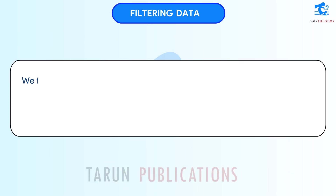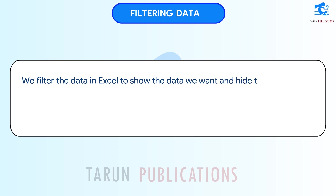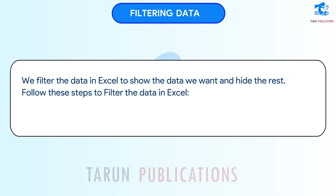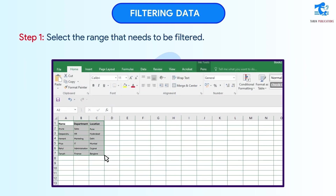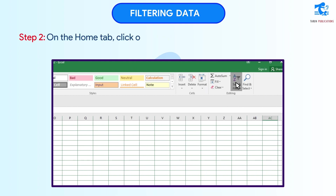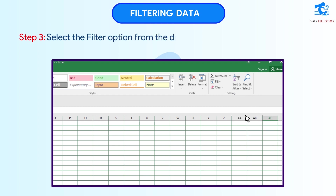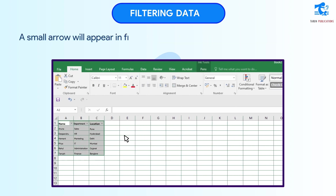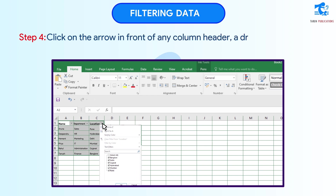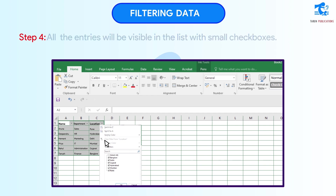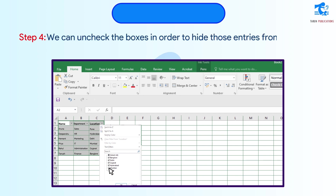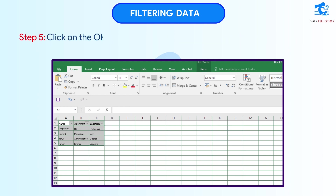Filtering Data. We filter the data in Excel to show the data we want and hide the rest. Follow these steps to filter the data in Excel. Step 1: Select the range that needs to be filtered. Step 2: On the Home tab, click on the Sort and Filter command from the Editing group. Step 3: Select the Filter option from the drop-down list. A small arrow will appear in front of the column headers. Step 4: Click on the arrow in front of any column header. A drop-down menu will appear. All the entries will be visible in the list with small checkboxes. We can uncheck the boxes in order to hide those entries from the data. Step 5: Click OK. The rows with unchecked boxes will be removed from the list.